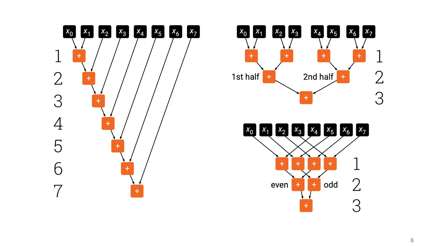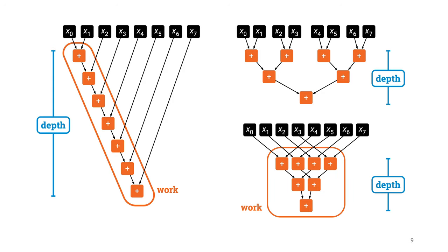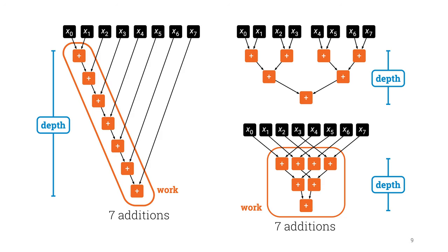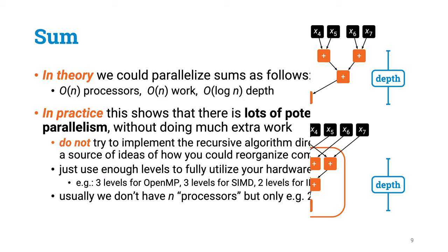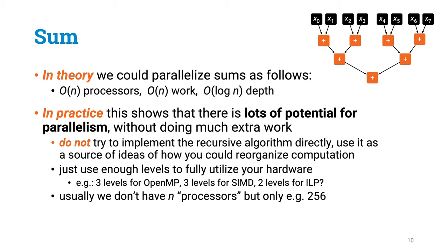So the number of levels corresponds to the number of time steps that we need at minimum, even if we had lots and lots of parallel threads available. So we can read from this illustration both how much work we do and what is the depth of the algorithm. Here both the sequential and the parallel algorithm do the same amount of work: exactly n-1 addition operations. But the depth of the parallel algorithm is much smaller, it is only logarithmic, while the depth of the sequential algorithm is linear. So we have now an efficient parallel algorithm for computing the sum.